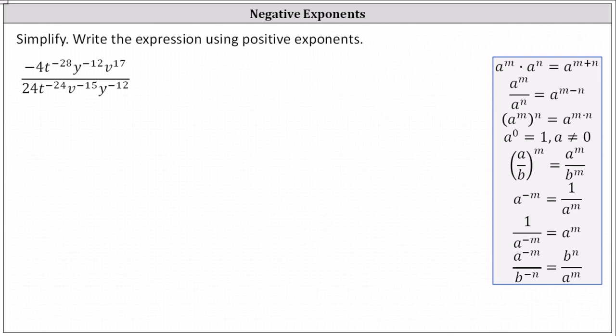We want to simplify the given expression and write using only positive exponents. Recall when dividing and the bases are the same, we subtract the exponents. a to the power of m divided by a to the power of n equals a to the power of the difference of m and n.